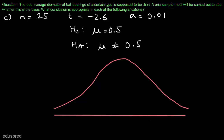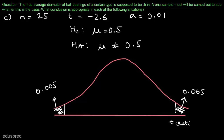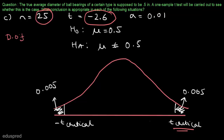In this case we will have a rejection region on each side. Alpha divided by 2 gives us 0.005 in each tail. Let's say t-critical is on the right and minus t-critical is on the left. These two are the rejection regions, and the area between minus t-critical and t-critical is the region where you do not reject the null hypothesis. The degree of freedom is equal to 25 minus 1, which is equal to 24. Let's see the t-table to find the value of t-critical.